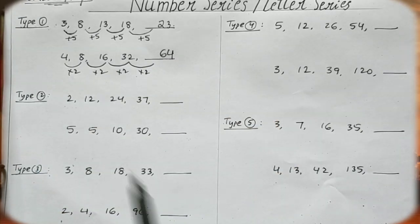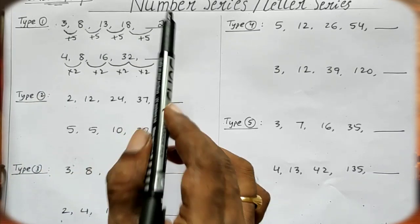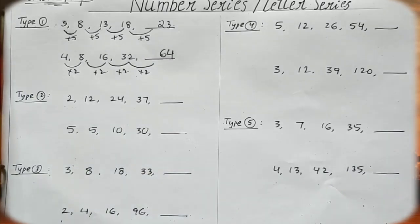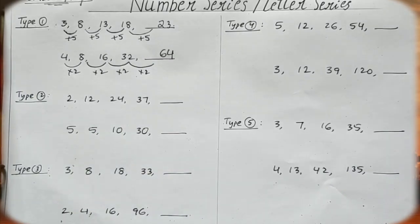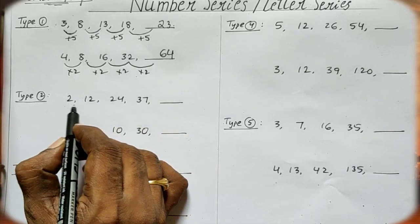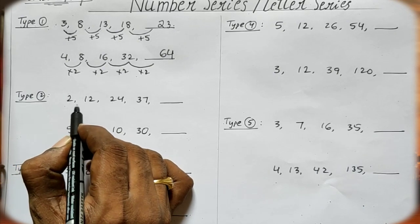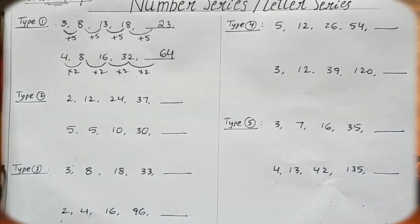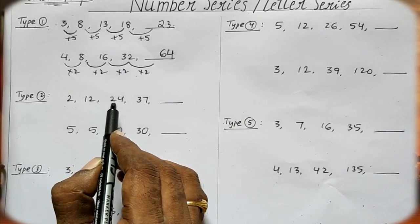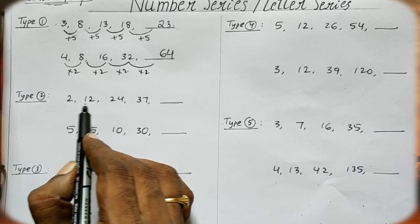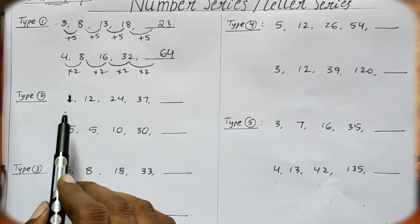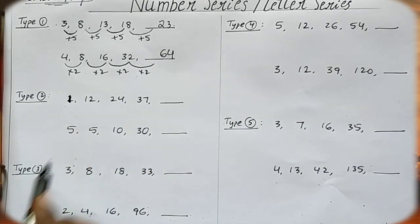Now Type 2: the series is 2, 12, 24, 37. We look at the differences between numbers. From 2 to 12, the difference is 10. From 12 to 24, the difference is 12.